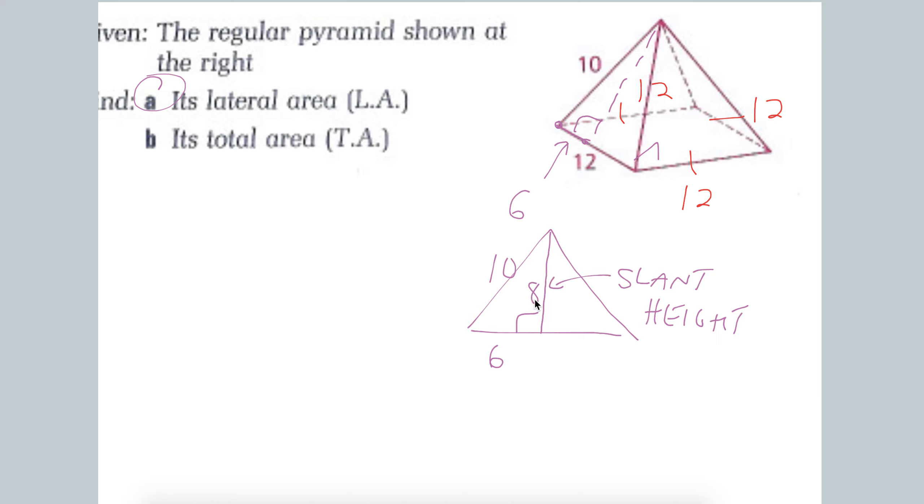So now that I know that that slant height is 8, the area of the triangle is 1 half base times height. The base is that full base, which is 12. And the height we just found to be 8.